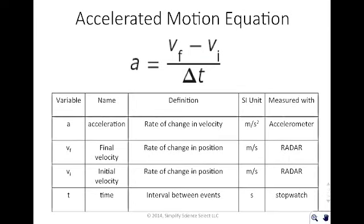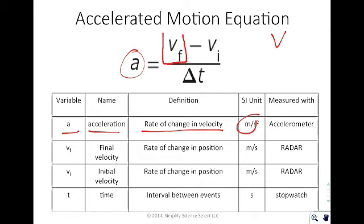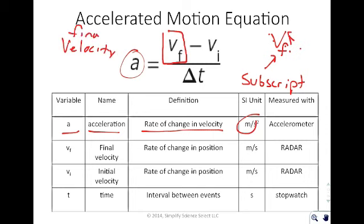The accelerated motion equation we'll use is: a equals vf minus vi over delta t. Here, a stands for acceleration — the rate of change in velocity, measured in meters per second squared. The vf uses a subscript f: the subscript is a way to further define the original variable. This is not a v and an f as two separate things — it's a v subscript f, meaning final velocity.